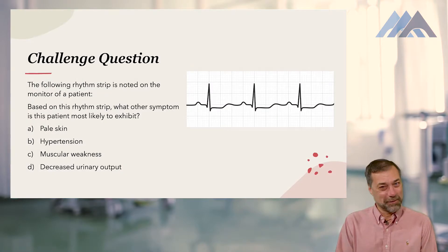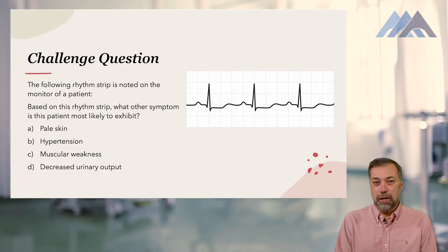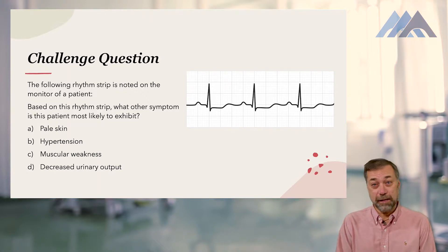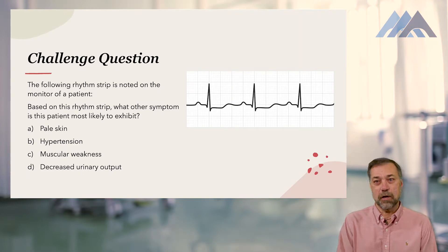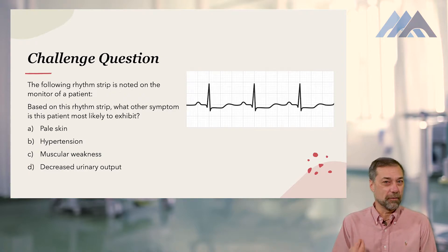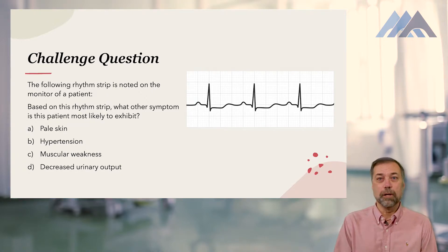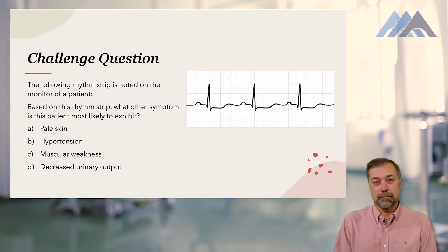As we've done in all the modules, let's start with a challenge question. The following rhythm strip is noted on the monitor of a patient. Based on this rhythm strip, what other symptom is this patient most likely to exhibit? For those listening on audio, the rhythm strip is available in the manual that goes along with this course, in the challenge questions section at the back.